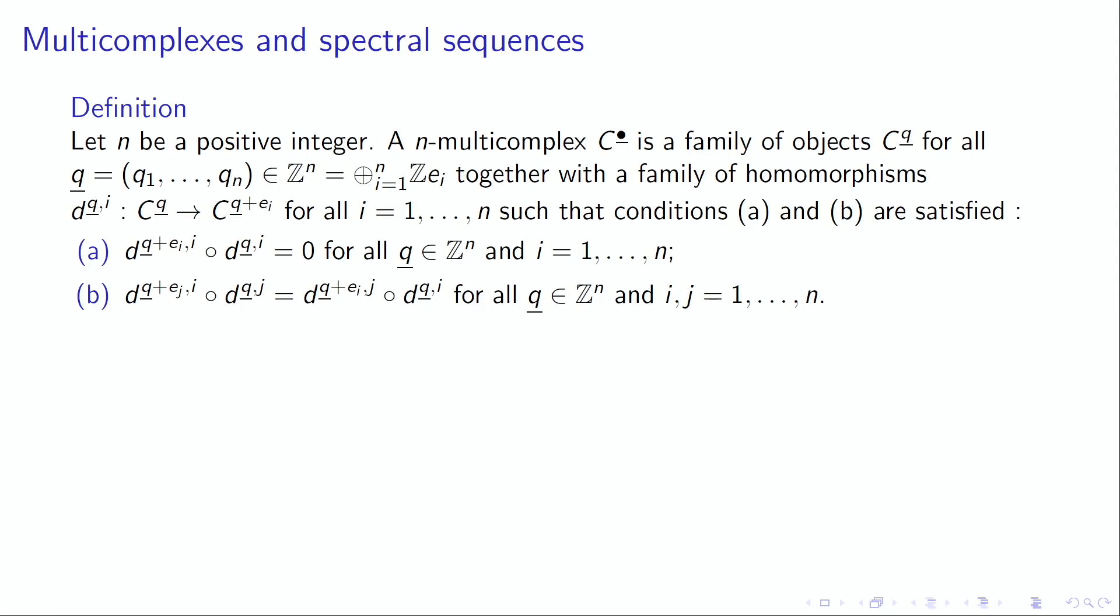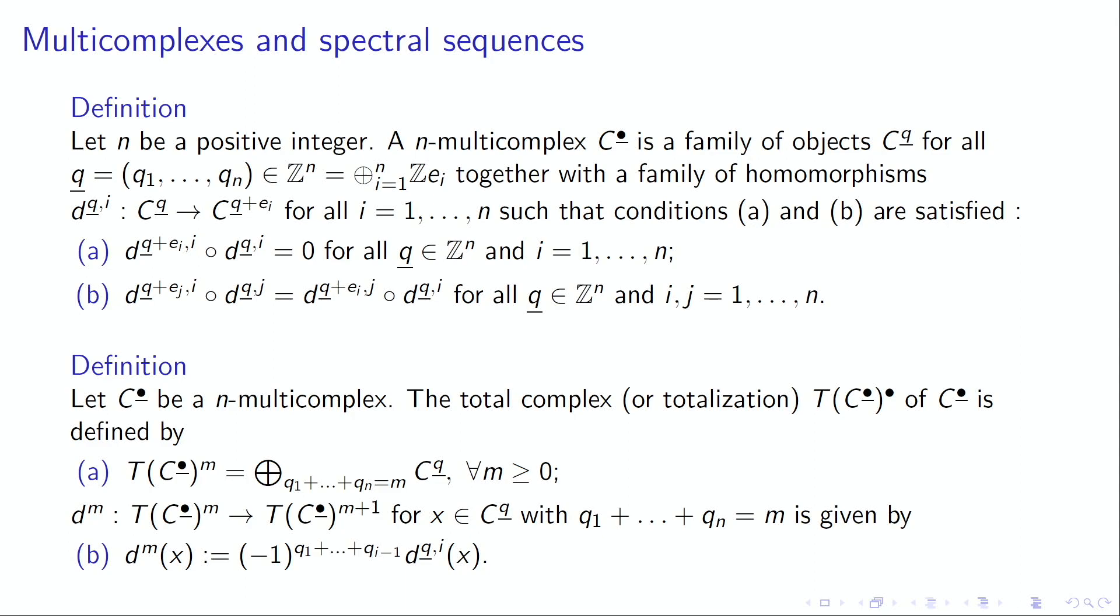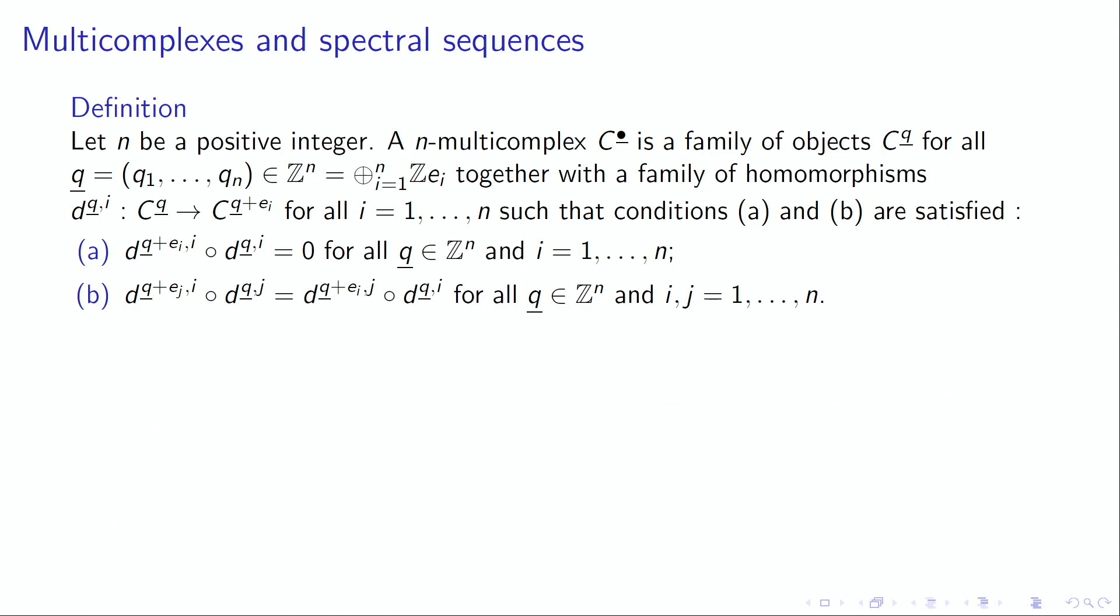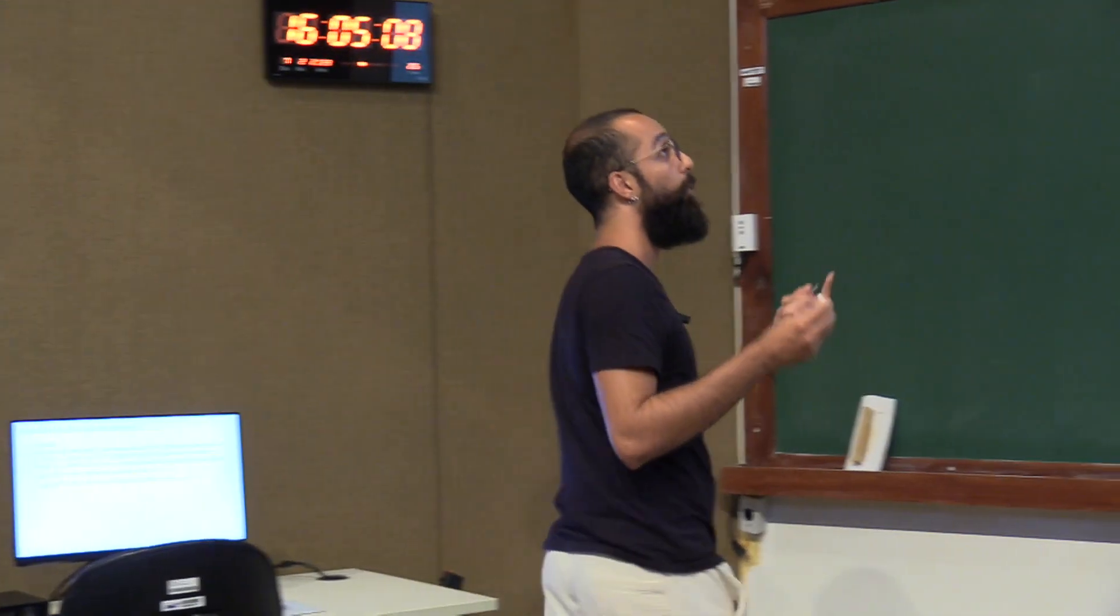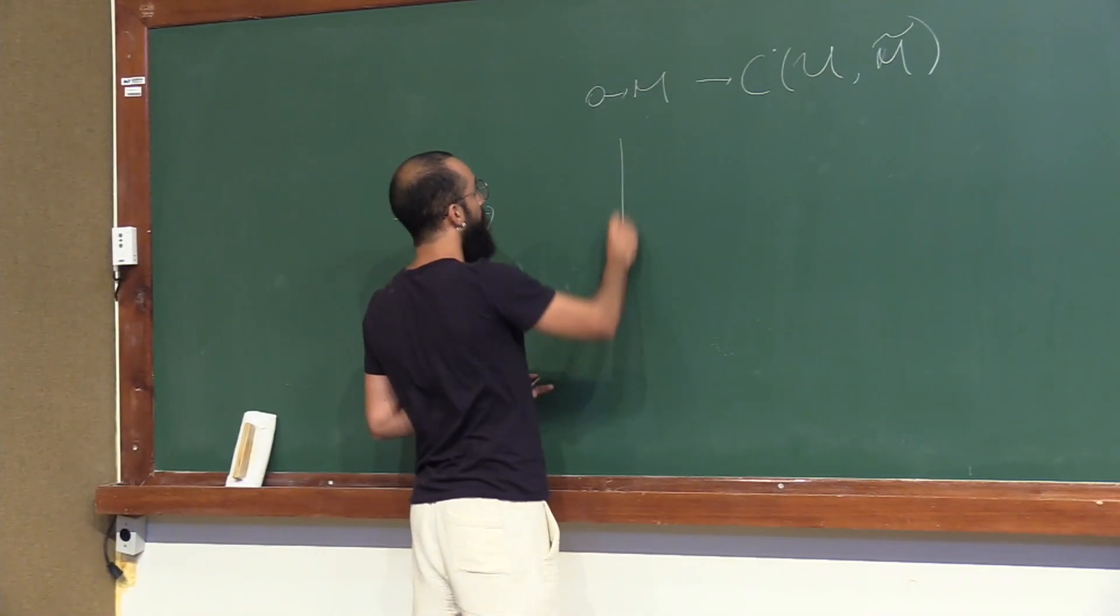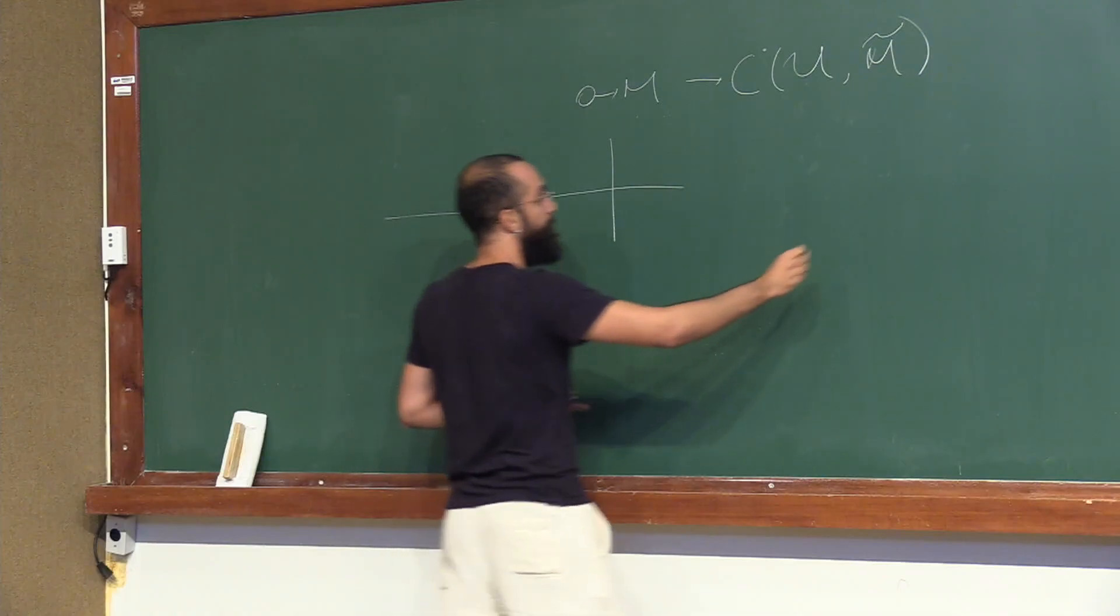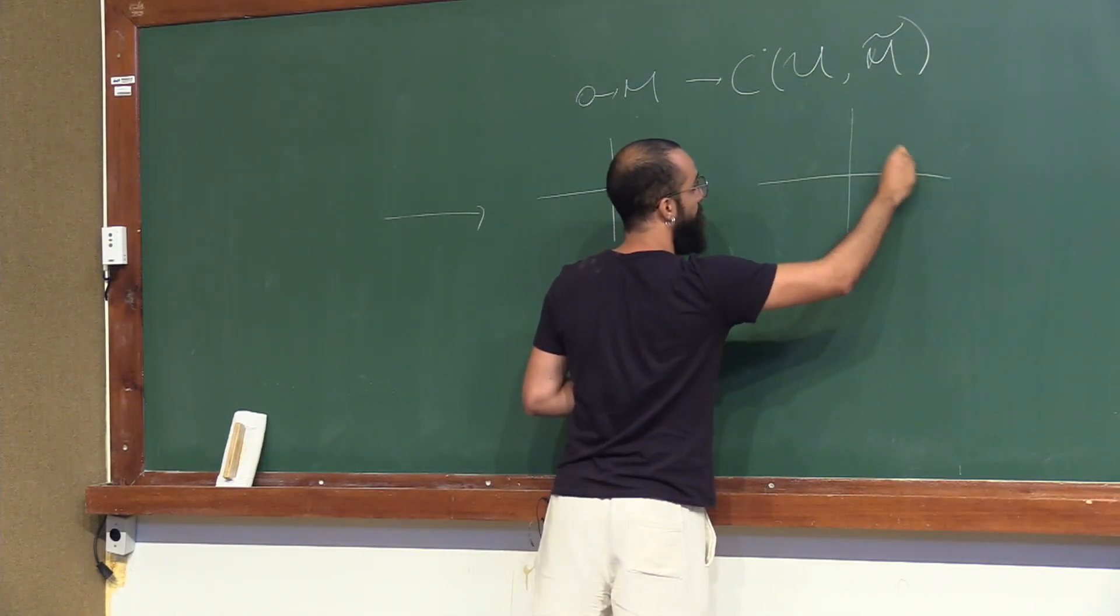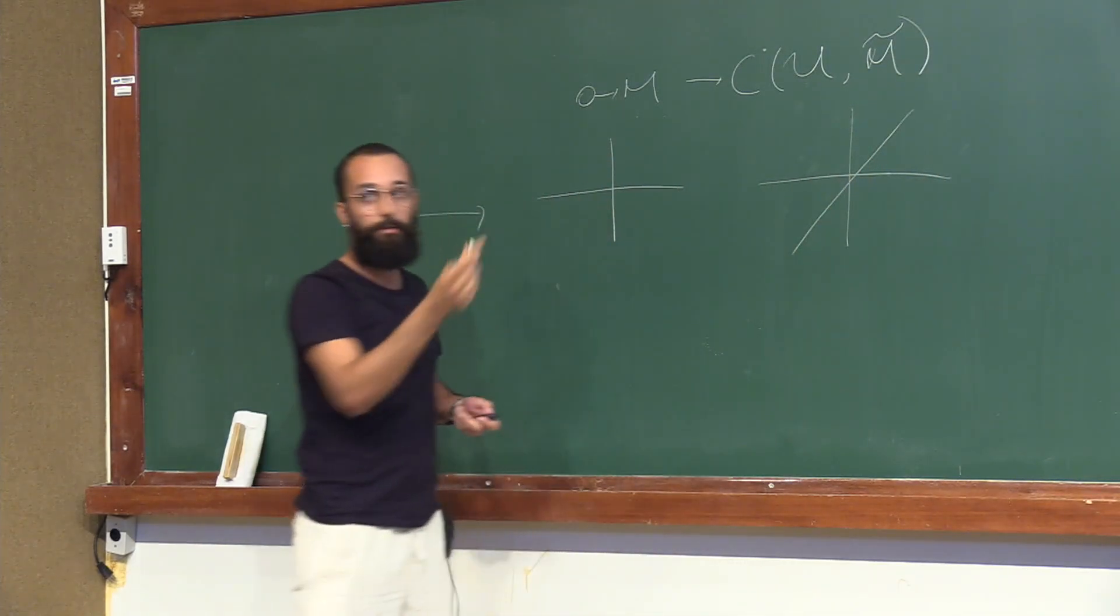An n-multicomplex is a family of modules C^q indexed by n-tuples with morphisms where composition in the same direction is zero and in different directions it commutes. For example, a one-multicomplex is just a complex, a two-multicomplex is a plane, a three-multicomplex is a space, and so on.